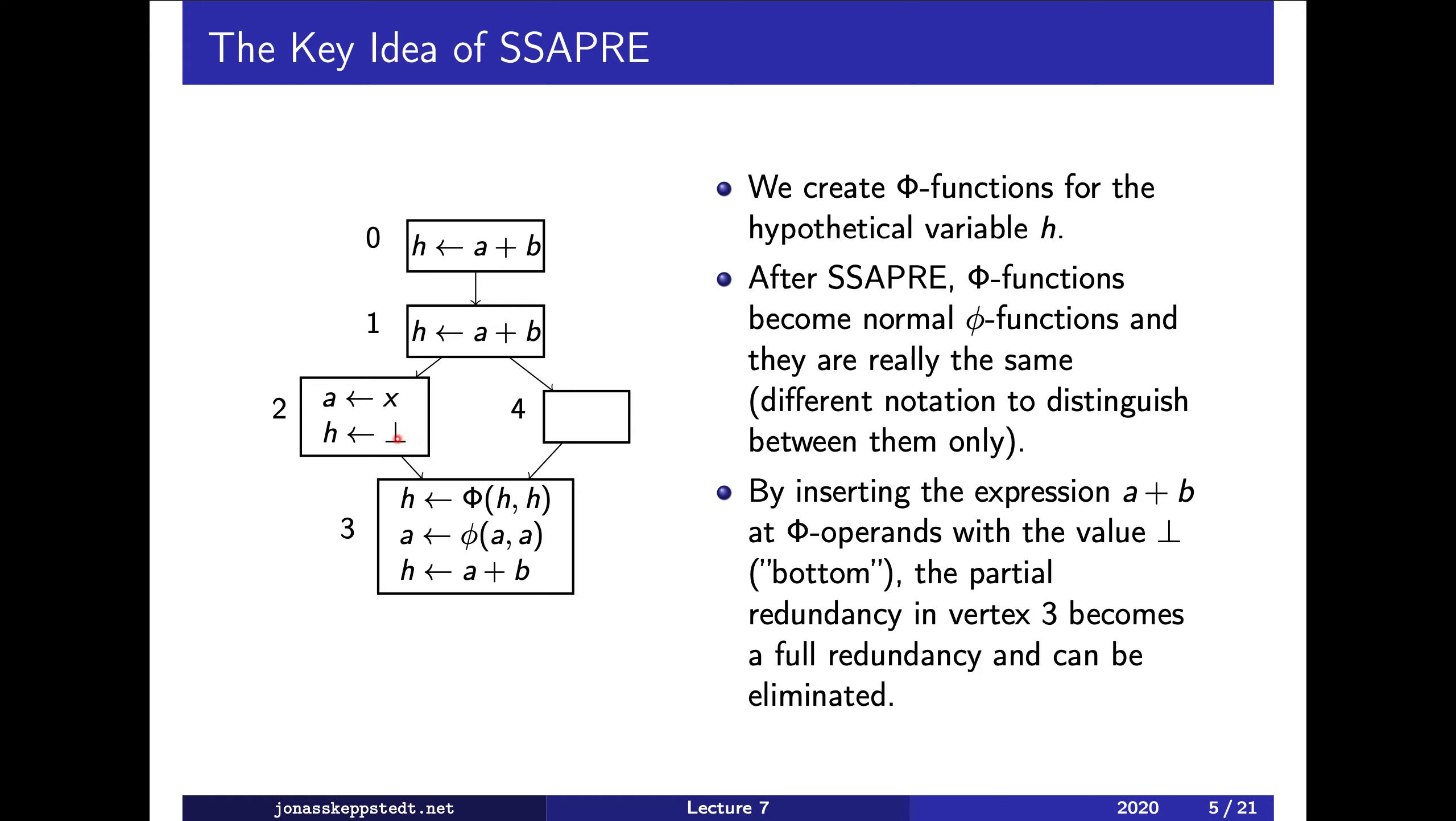We will see exactly why and when later, but this is the real key idea to SSA PRE: where the value is not available, we have a bottom valued operand, and for some of these we insert the expression, create an instruction which computes a plus b, and then subsequent a plus b might be redundant and can be eliminated. Of course it's necessary to keep track of which variable version we have.